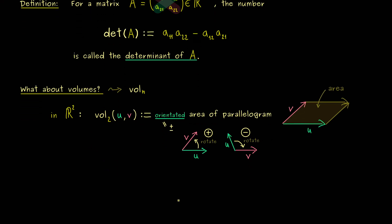However, at this point you might say that we have already seen this orientated area of a parallelogram. And indeed, we discussed that in part 10 when we talked about the cross product in R3. And exactly this we can use now to calculate this two-dimensional volume.